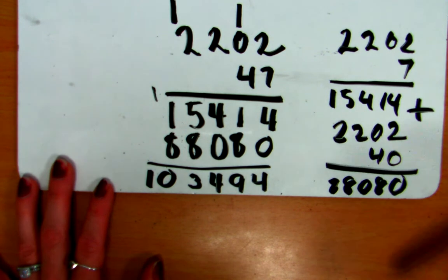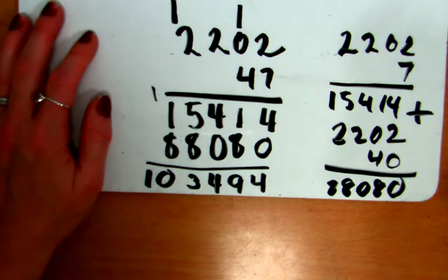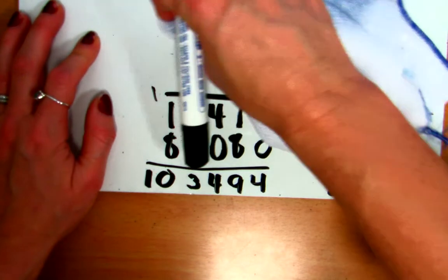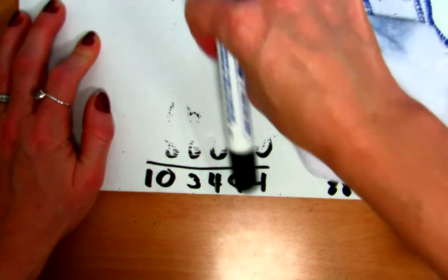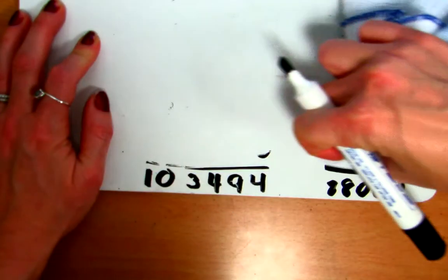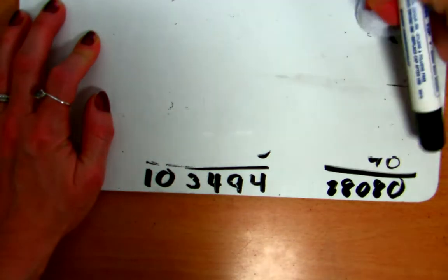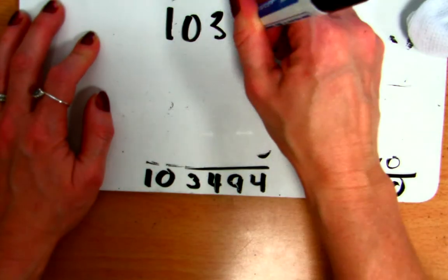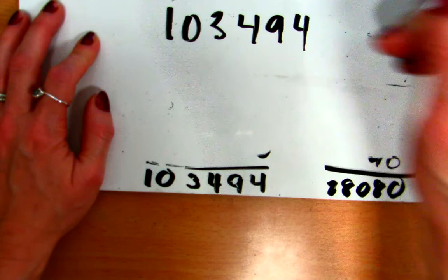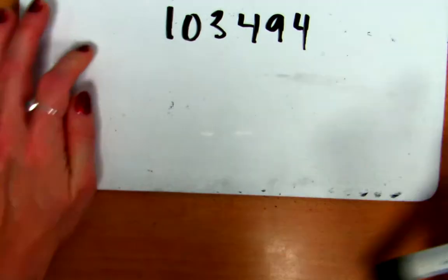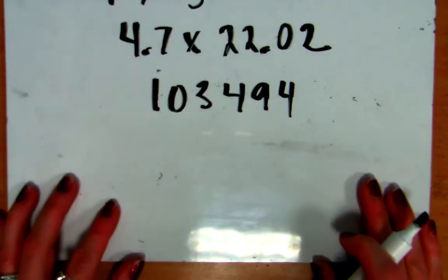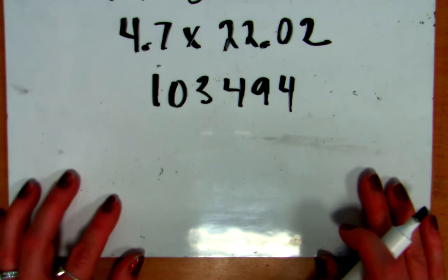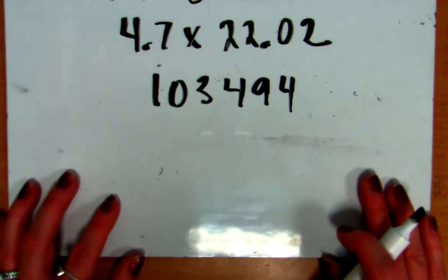So, I know that 47 times 2,202 is, contains the digits, 1, 0, 3, 4, 9, 4. So, I know that 4.7 times 2202, if I do the straight multiplication, I end up with 103494. Now, I have to put in my decimal places back in. And this is where you have a few options of what to do.